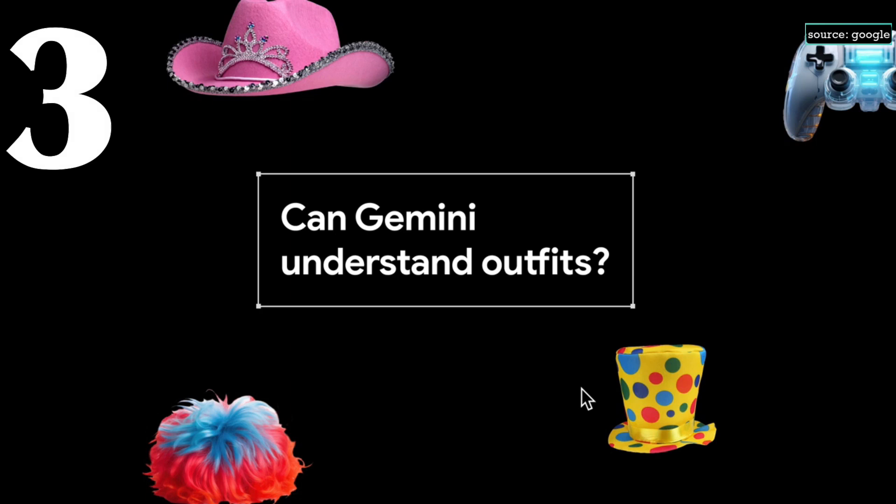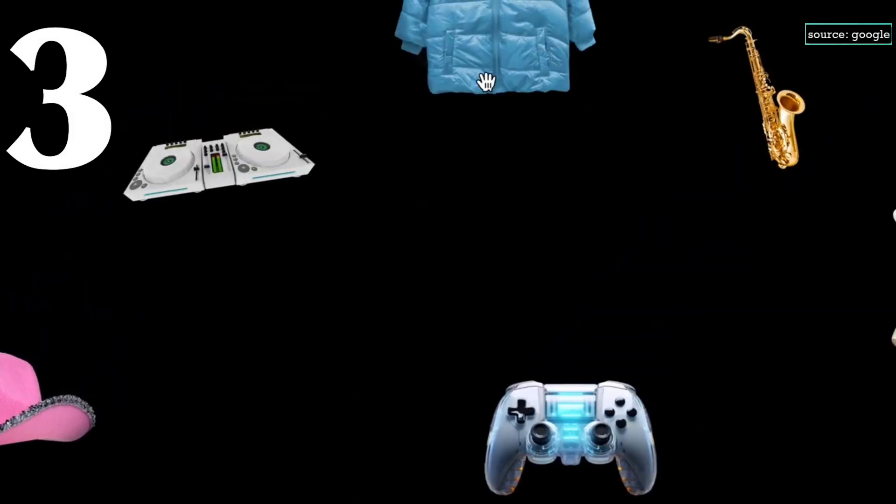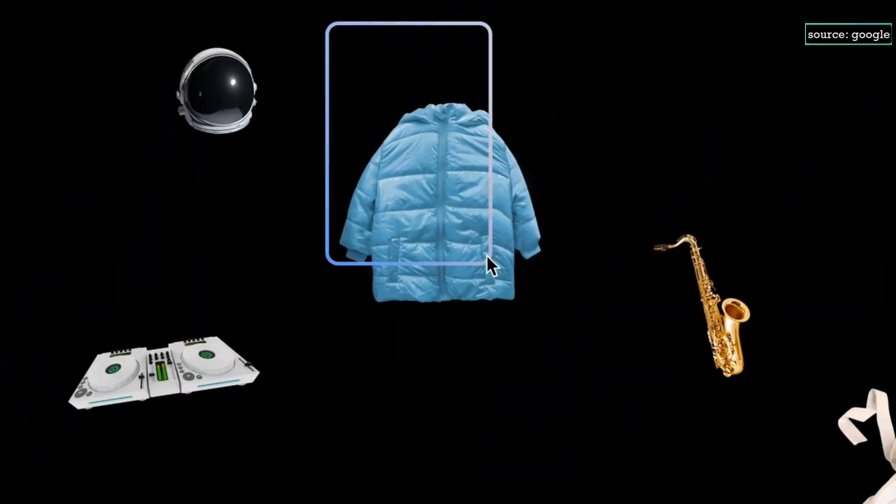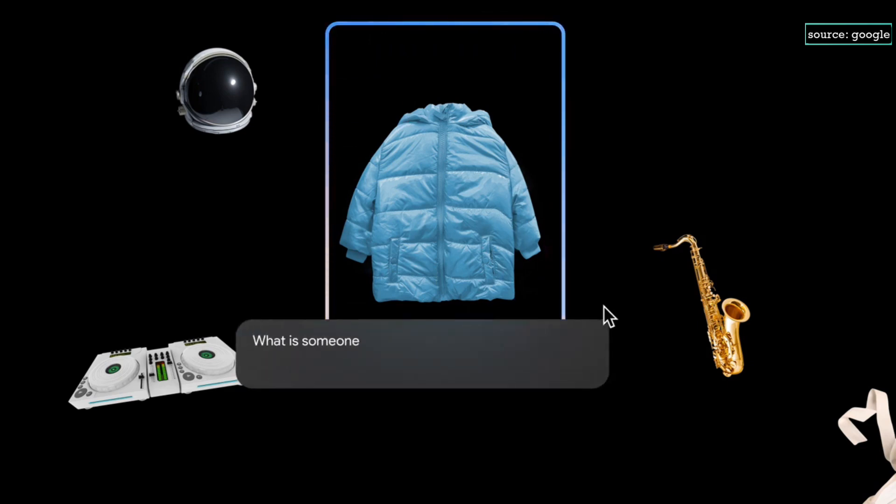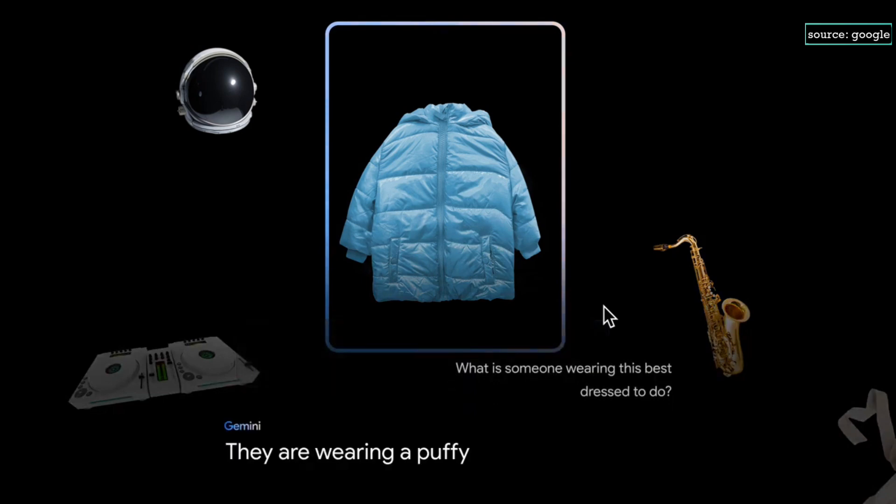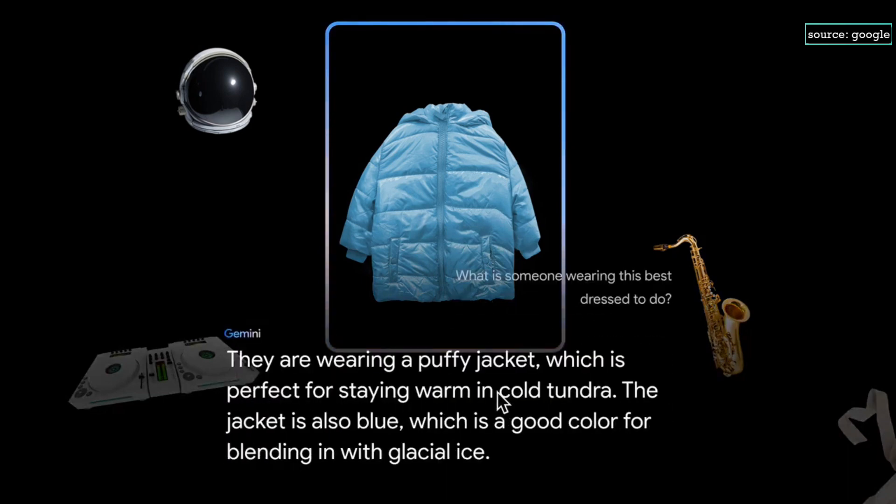Let's see if our multimodal model Gemini can understand outfits. We'll start with something simple, like this puffer. And ask, what is someone wearing this best dressed to do? Perfect for staying warm in the tundra. Good color for blending in with glacial ice.